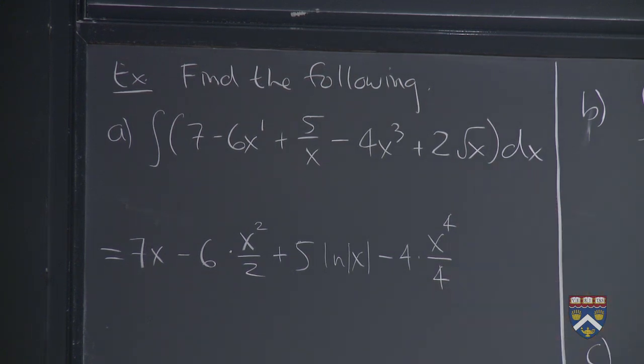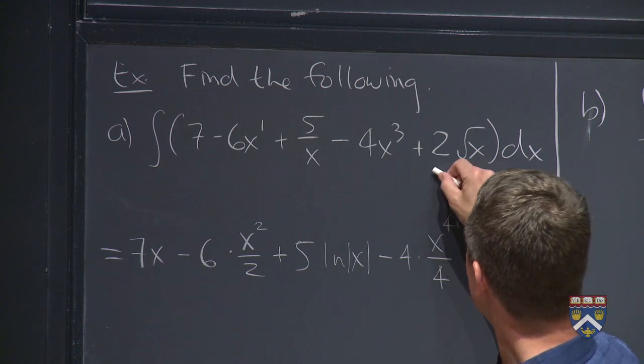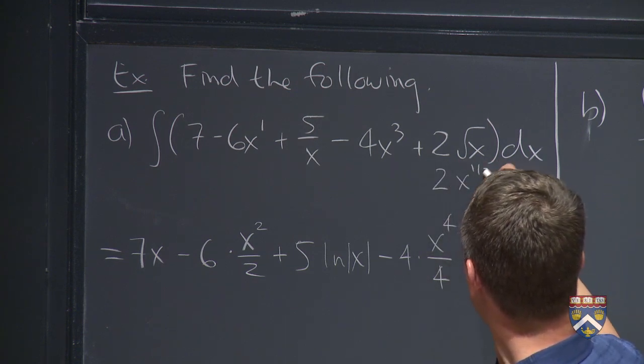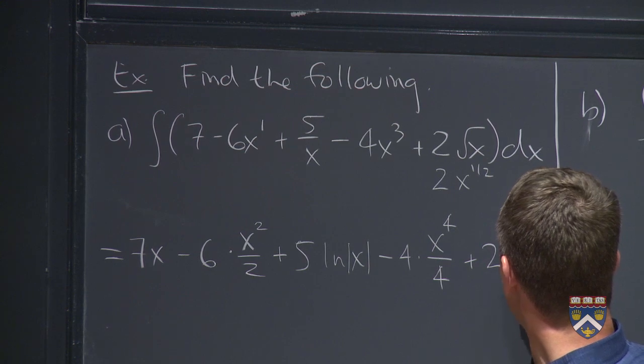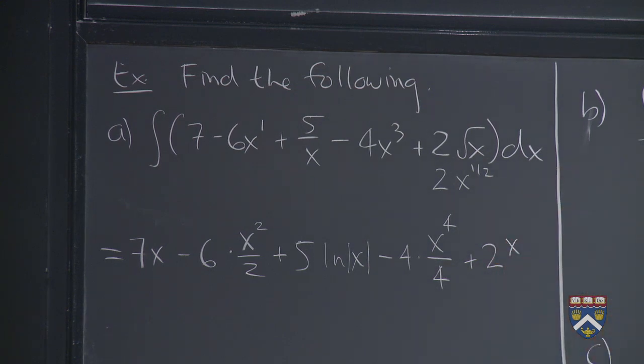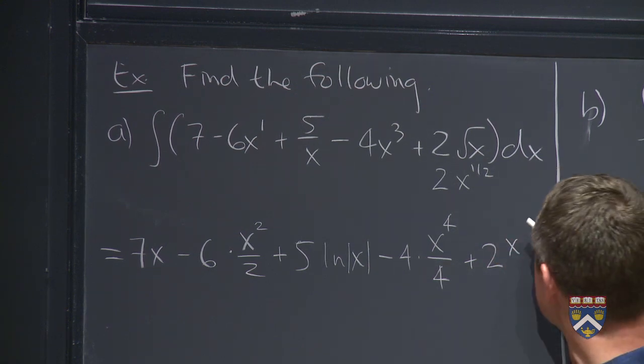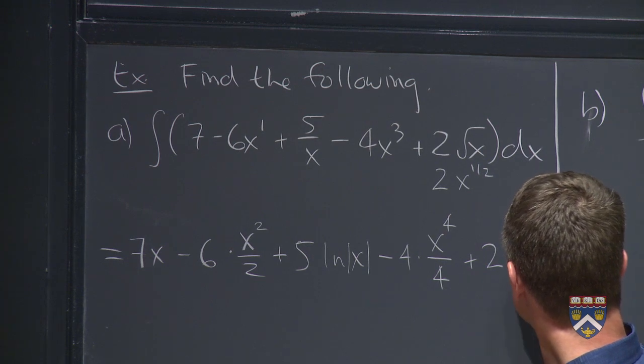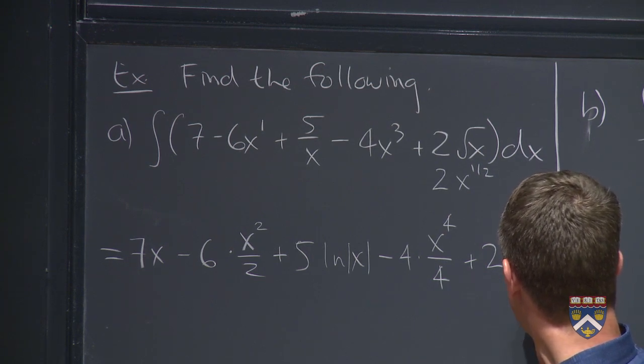Now what about this? This would look a lot nicer if we rewrote it as 2x to the 1 half power. So then that will become what? 2x to the, we want to add one to the exponent. We're always just doing the opposite of what we did with derivatives. 2x to the 3 halves and divide by 3 halves.